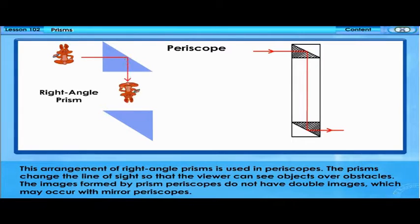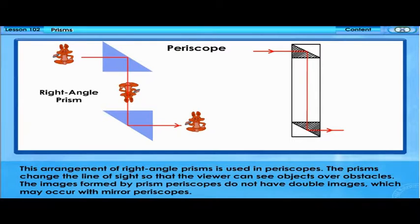This arrangement of right-angle prisms is used in periscopes. The prisms change the line of sight so that the viewer can see objects over obstacles. The images formed by prism periscopes do not have double images, which may occur with mirror periscopes.